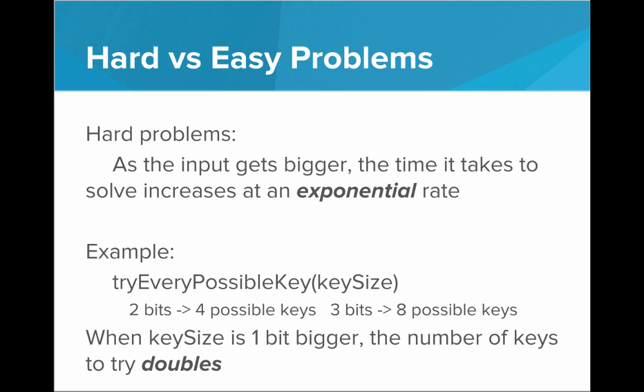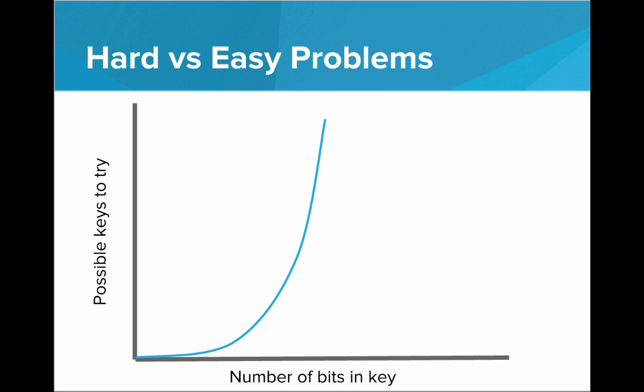So if we have a two-bit key, that's 2 to the second, or four possible keys. If we increase the bit size only once to have three bits, we now have eight possible keys. When the key size gets one bit bigger, the number of keys we have to try doubles — it doesn't get bigger by one, it doubles. If we keep doing this, we get an exponential increase: it doubles, it doubles, it doubles. Pretty soon we have a problem that's too big to solve. As the number of bits in the key increases, the possible keys to try exponentially increases. This is what makes cracking an encryption a hard problem.